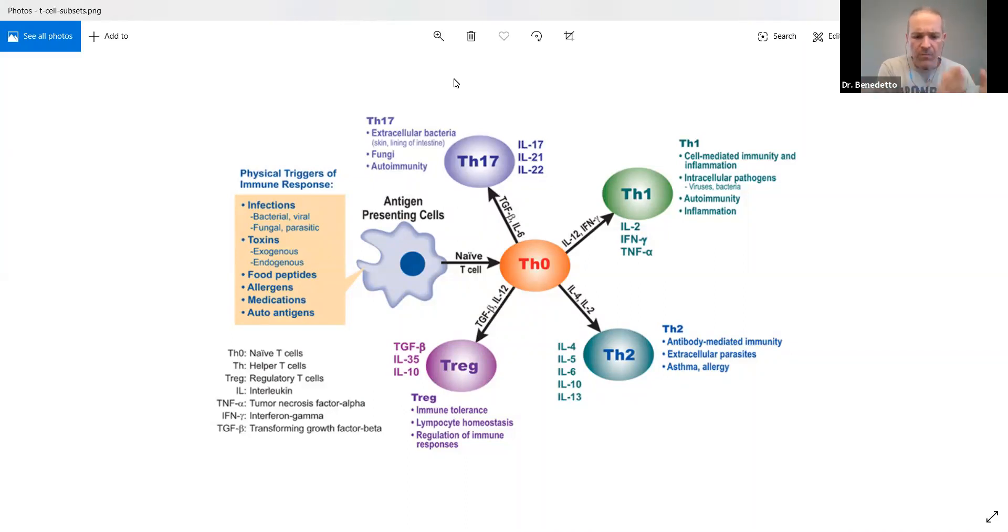So we get exposed to something. An antigen presenting cell takes it and presents it to a Th0, kind of like the king. We're coming to bow at the feet of the queen or the king. Here's what I have for you. And then the Th0 cell is going to decide what to do with it.